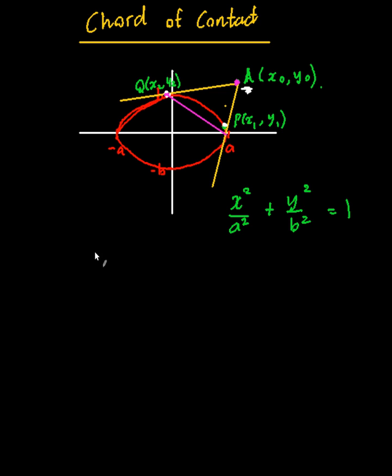So to do this I'm going to rewrite the equation of a tangent that I got from the previous video about tangents. So just recapping, I end up getting x x1 on a squared plus y y1 on b squared equals 1. This is the equation of a tangent.